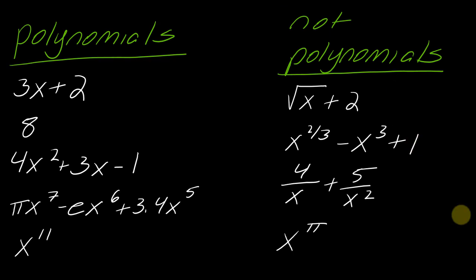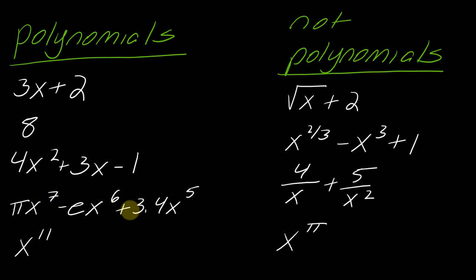Also, if I had something like x to the pi — pi is obviously not a whole number; we know it's a long non-repeating decimal. So all of these are not polynomials. Usually it's something kind of weird that's not a polynomial. The big thing is to make sure they have whole number exponents — any number you want can go as a coefficient, but it's got to be positive whole number exponents.